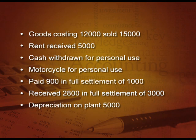Next, depreciation on plant of 5,000. Depreciation is an expense, so it reduces capital by 5,000, and the value of plant also goes down by 5,000 because depreciation means the value of the plant has decreased. So: plant minus 5,000, capital minus 5,000.